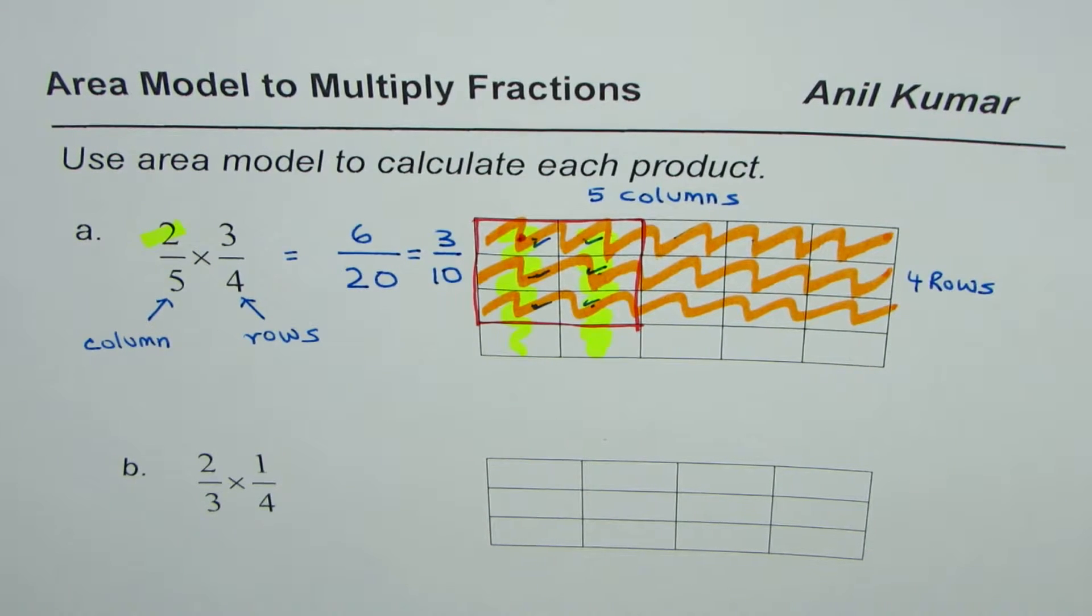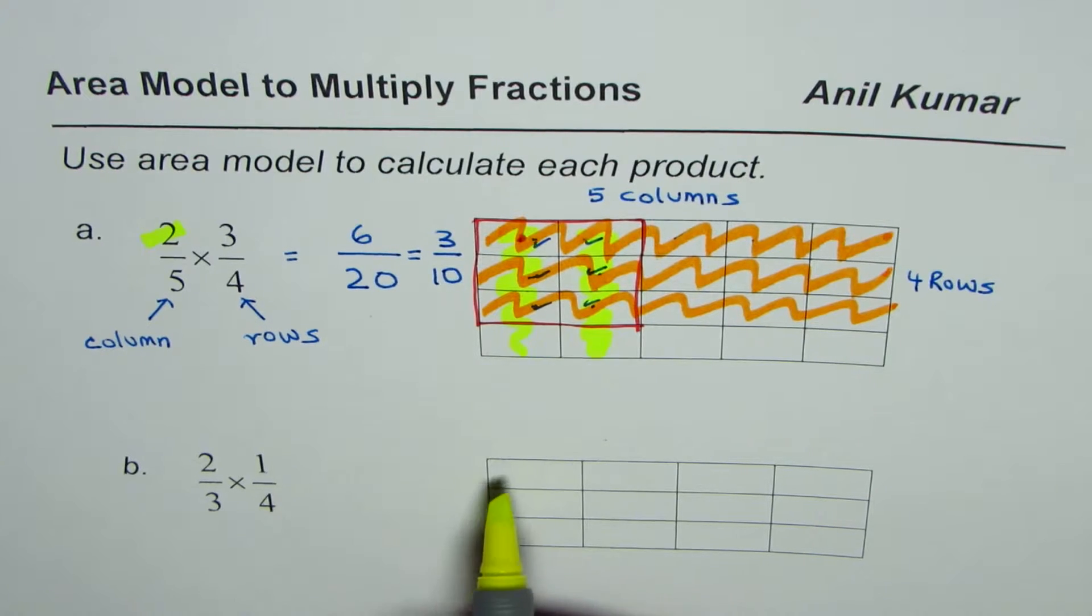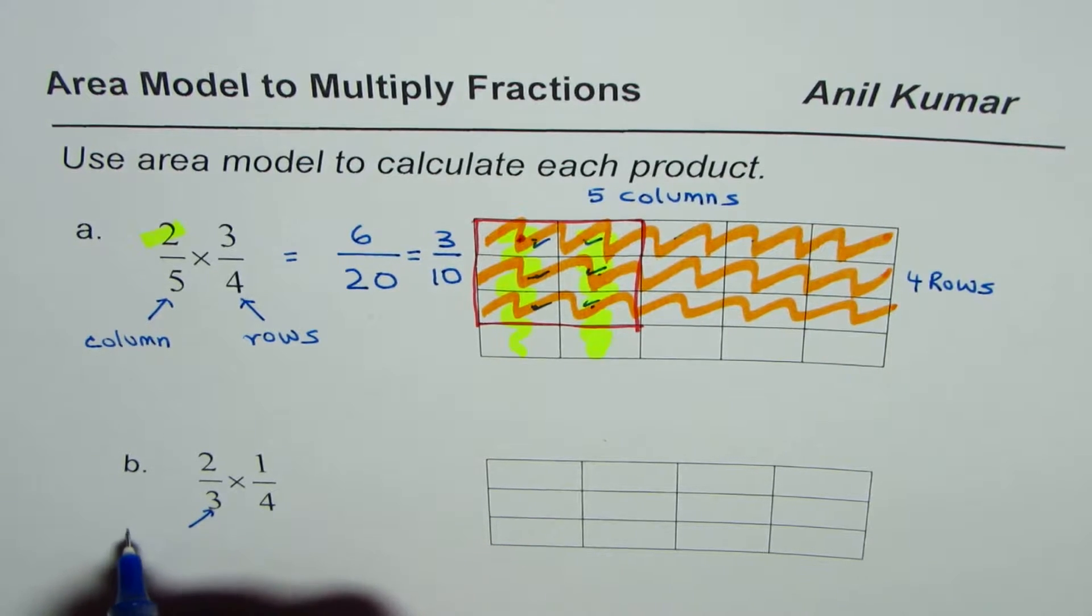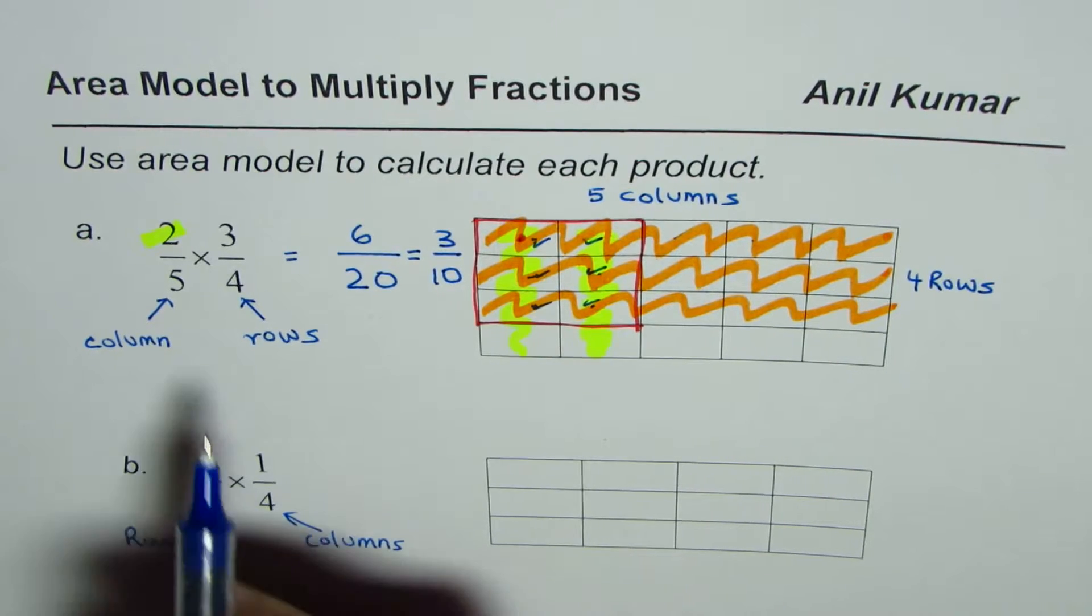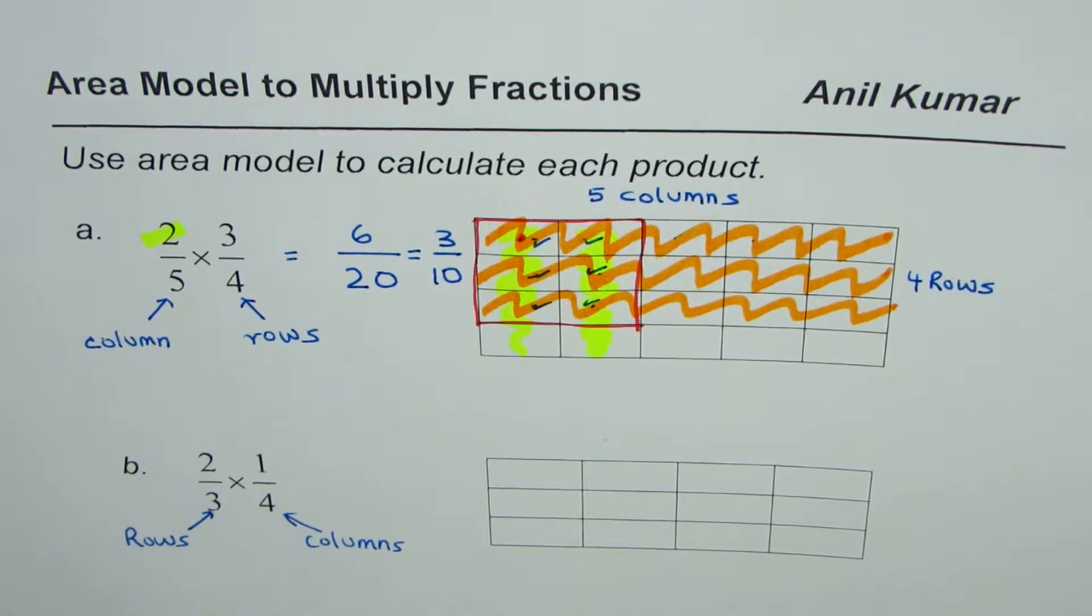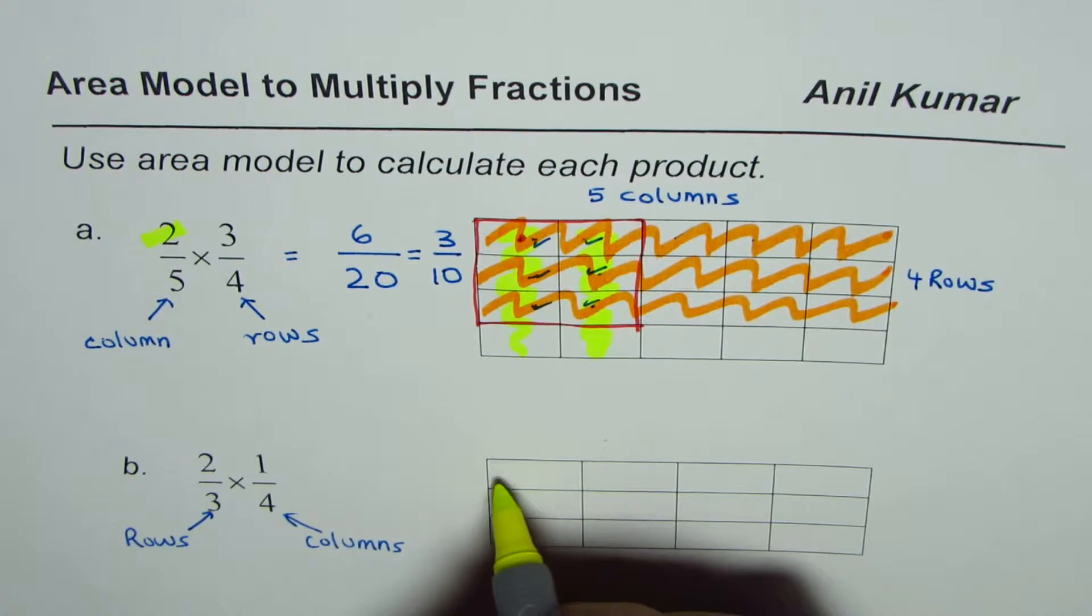That is how you do it. I hope the steps are absolutely clear. Follow these steps and do part B, that is two thirds times one fourth. Here is the solution. We see that there are three rows this time, so in this particular case we are taking three rows and four columns.